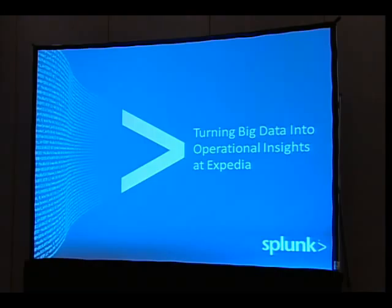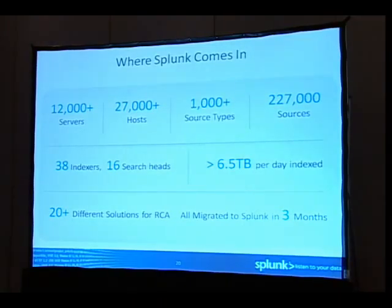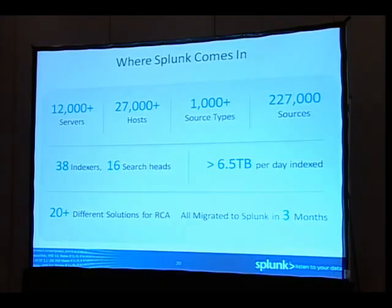I'm now going to introduce Eddie Satterley to talk about his time at Expedia and what he learned about big data there. Formerly, I was running architecture and engineering at Expedia — the world's largest travel site, with about 90 different localized sites, just over 4,000 total technology workers, and a development team of about 1,800. In Expedia's environment there are just over 12,000 servers all running a Splunk forwarder, 27,000-plus hosts including appliances and network devices, 1,000-plus different source types, 227,000 sources, and the environment grew to 38 indexers and 16 search heads, indexing a little over 6.5 terabytes per day.